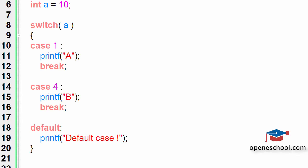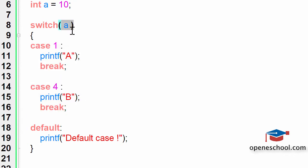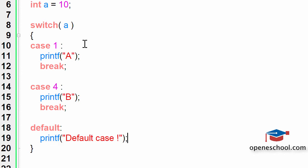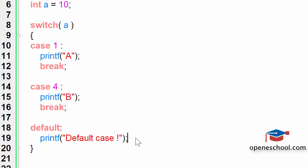In this short video tutorial we will understand the importance of the break statement with the default case. In the previous video we understood why we write the default case - if no other cases match with the value of the decision variable, the default case will automatically get executed. In the program we wrote previously, the value of a is 10, so both cases will not match and control shifts to the default case.